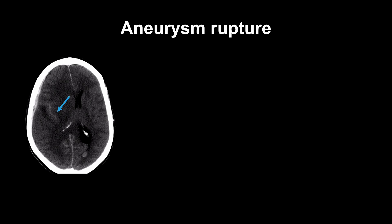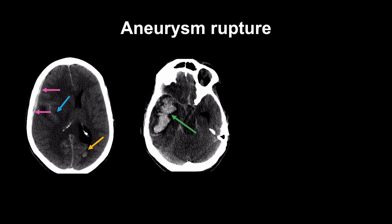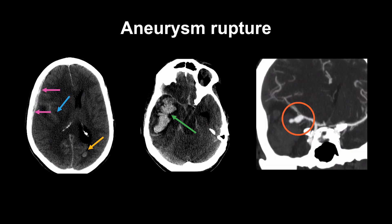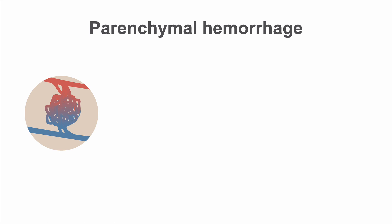Even though subarachnoid hemorrhage is usually the only abnormality evident after aneurysm rupture, in a small percentage of cases aneurysm rupture can also result in intraventricular hemorrhage, subdural hemorrhage, or parenchymal hemorrhage, with or without subarachnoid hemorrhage. In this case, blood was evident in four compartments — subarachnoid, subdural, parenchymal, and intraventricular — after a rupture of a middle cerebral artery aneurysm.